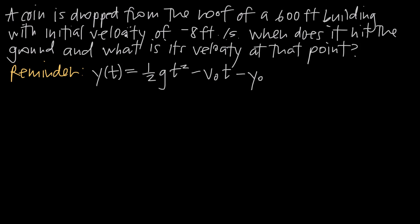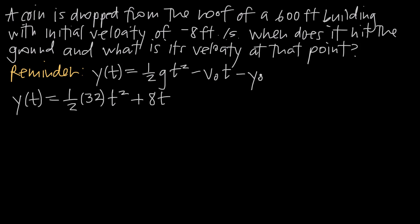So if we plug the information we've been given into this formula to get the position function, we'll have y(t) equal to one-half times g — the gravitational constant. Because we're dealing with feet per second, gravity is 32. When you have meters per second, you plug in 9.8; feet per second, you plug in 32. So we get 32 t squared, minus v-sub-zero. Our initial velocity is negative 8, so we have minus negative 8, which equals plus 8, and then our t. And y-sub-zero is the initial position, which is 600 feet off the ground, so we subtract 600. Simplifying, we get y(t) = 16t squared plus 8t minus 600.